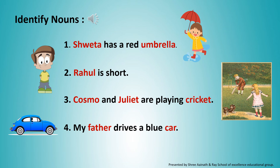Number three: Cosmo and Juliet are playing cricket. Cosmo and Juliet are nouns, and cricket is also a noun. Number four: My father drives a blue car. Father is a noun and car is a noun.